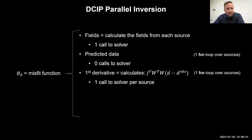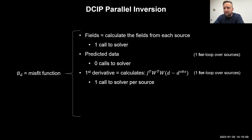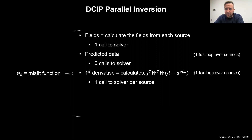Secondly, we need to calculate the first derivative. SimPEG uses the implicit form of calculating the transpose of the sensitivity matrix times a vector result — we're not explicitly forming it. That involves one for loop, and every iteration requires a call to the solver. However, we can store the factorizations from the fields and reuse them as we go through the calls, which helps.